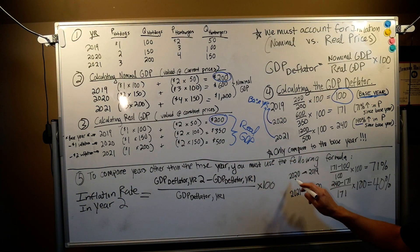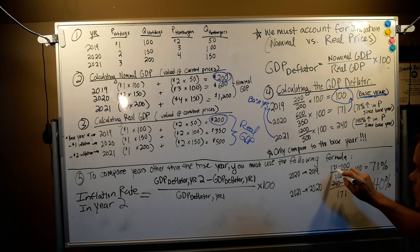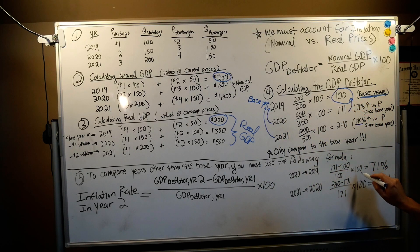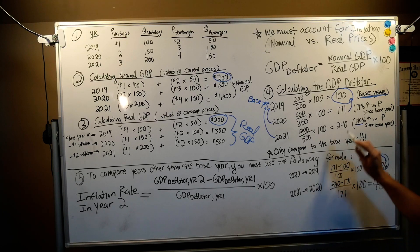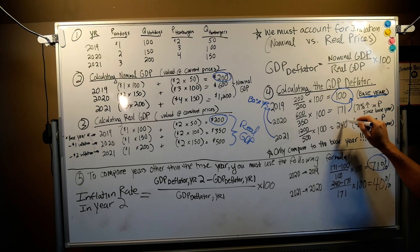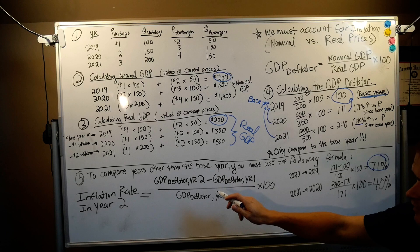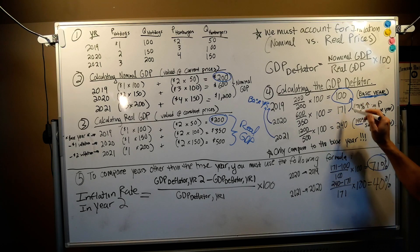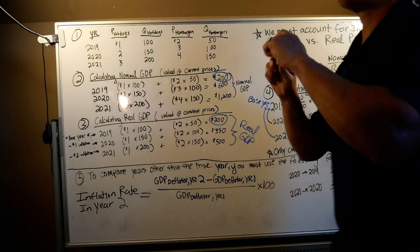Now let's compare 2021 to 2020. Earlier I posed a true/false: is the inflation 69%, from 240 minus 171? That's wrong — you can't subtract non-base deflators. Using the formula: GDP deflator year two is 240, minus 171, divided by 171, times 100. The result is approximately 40%, not 69%. With the inflation rate in year two formula, you can compare whatever years you want — it's essential when spanning long time periods like 100 or 300 years.